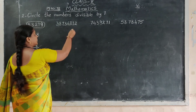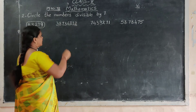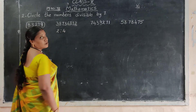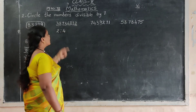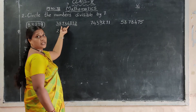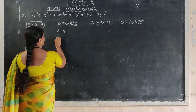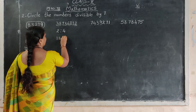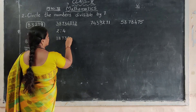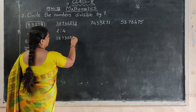Next number: 36,830. The last digit is 0. Double the last digit: 0 plus 0 equals 0. Subtract 0 from the rest of the digits: 3,683.